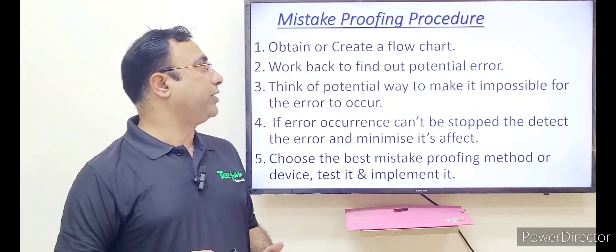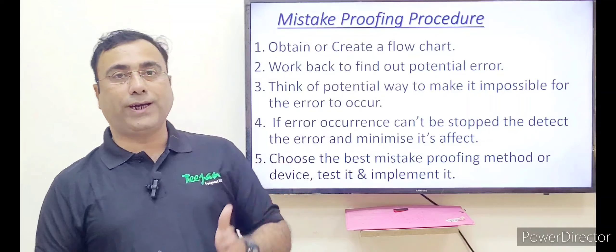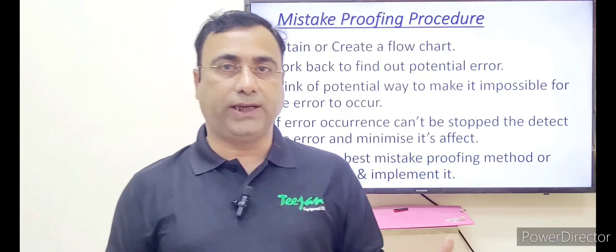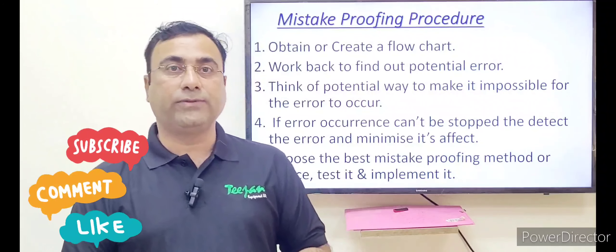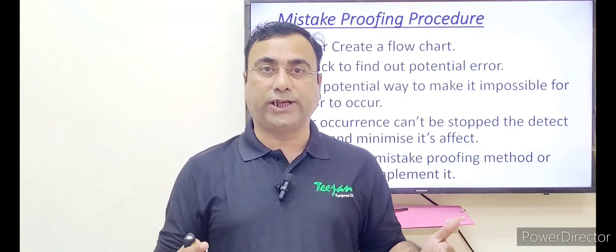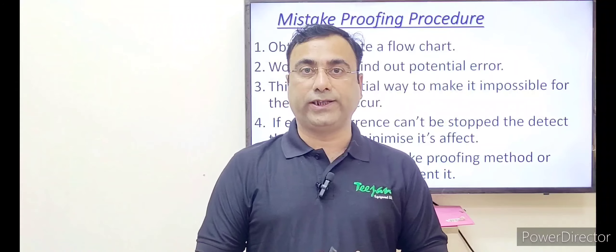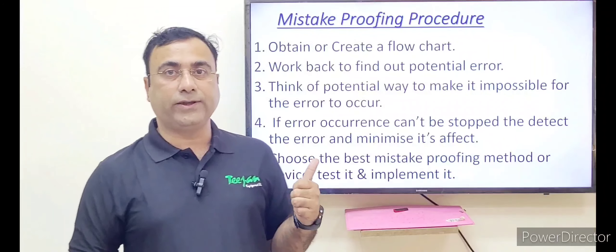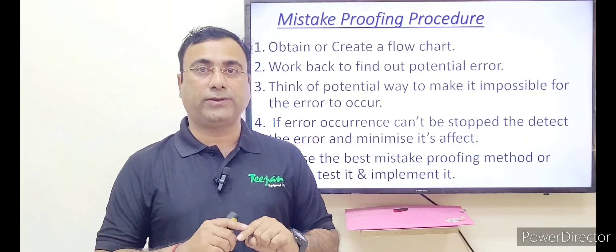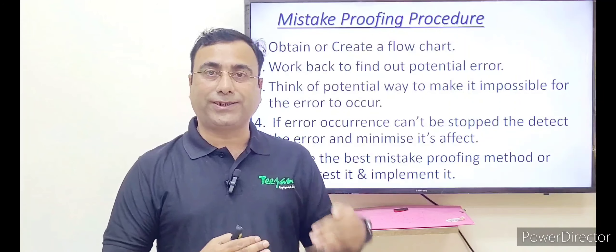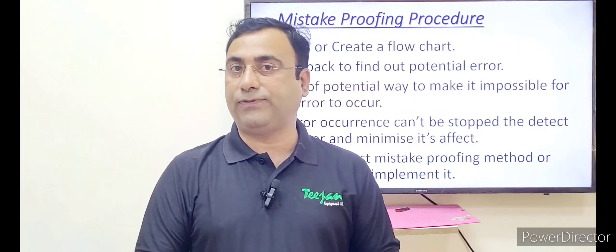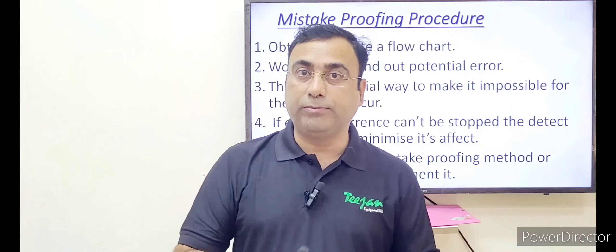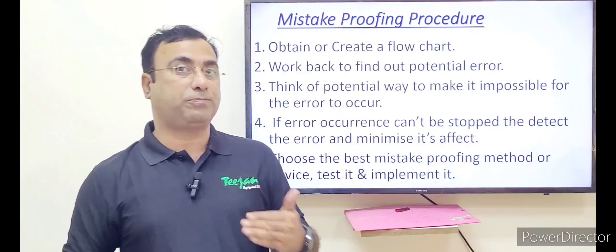So let us see how it works. When you have identified that human error is quite obvious, you have to work on the mistake proofing. For that they are saying, first make a flow chart that how the process starts and it moves on towards the end. If you have the flow chart, that's fine. If you don't have, then make it with the help of the expert.